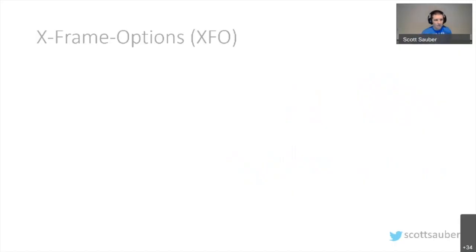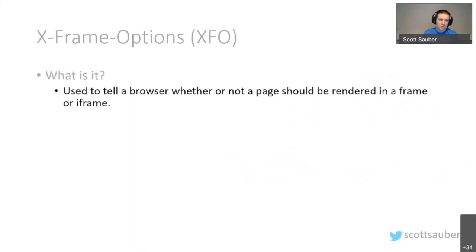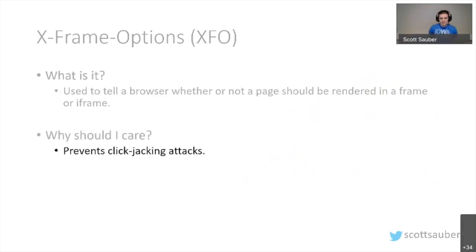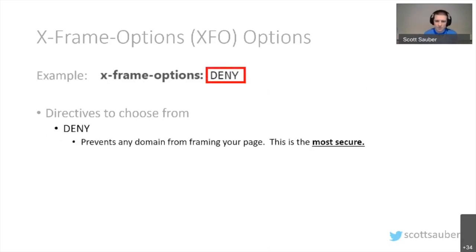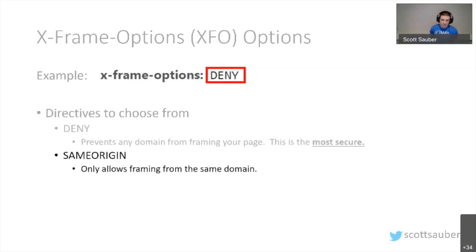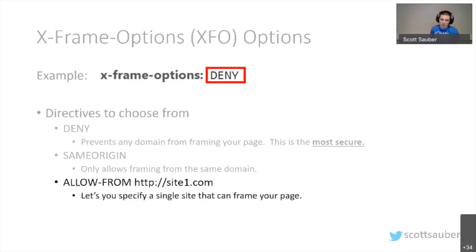The next security header is X-Frame-Options, or XFO. It tells a browser whether or not your page should be rendered in a frame or iframe, and it prevents clickjacking attacks. The options are: deny — prevents any site from framing your page, which is most secure; same-origin — allows framing only from the same domain; and allow-from — lets you specify specific sites allowed to frame your page.